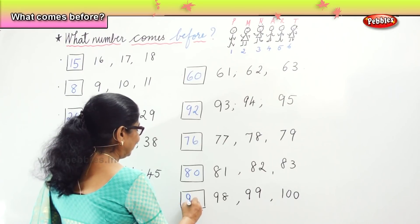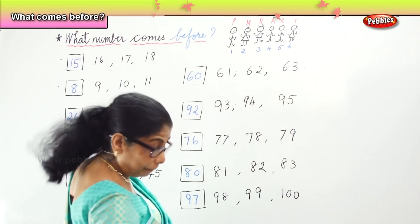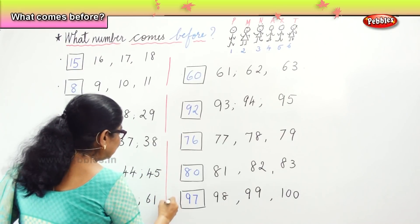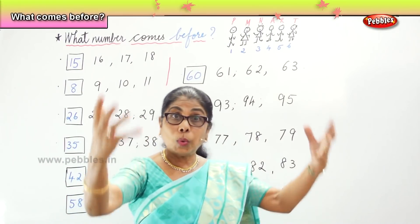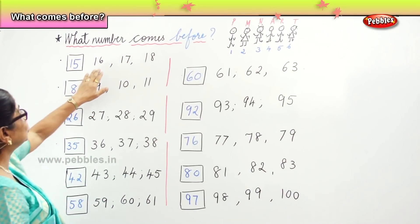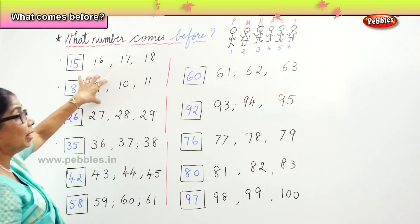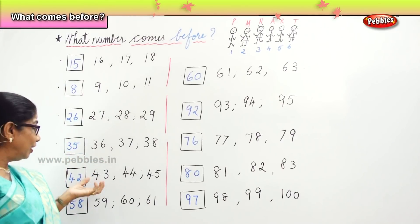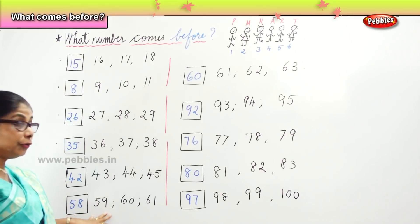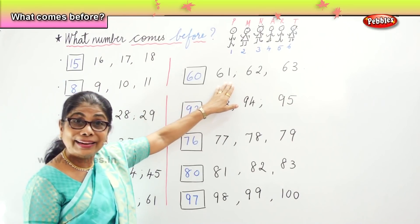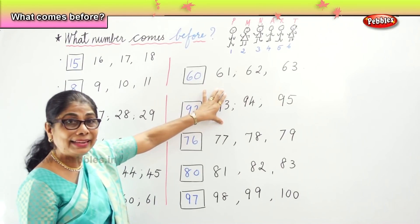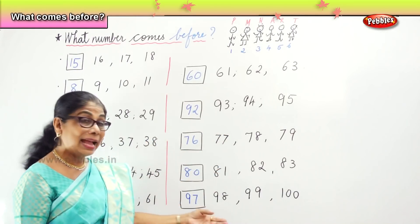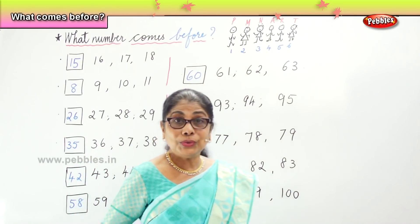Now let us look at the number pattern here. So we are done with the exercise to help us remember the numeral. What comes before 16? 15. Before 9? 8. Before 27? 26. Before 36? 35. Before 43? 42. Before 59? 58. Before 61? 60. Before 93? 92. Before 77? 76. Before 81? 80. And before 98? 97. Very good!